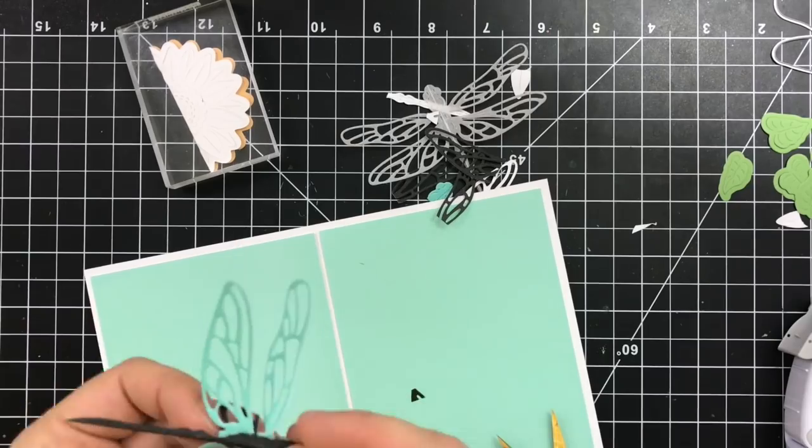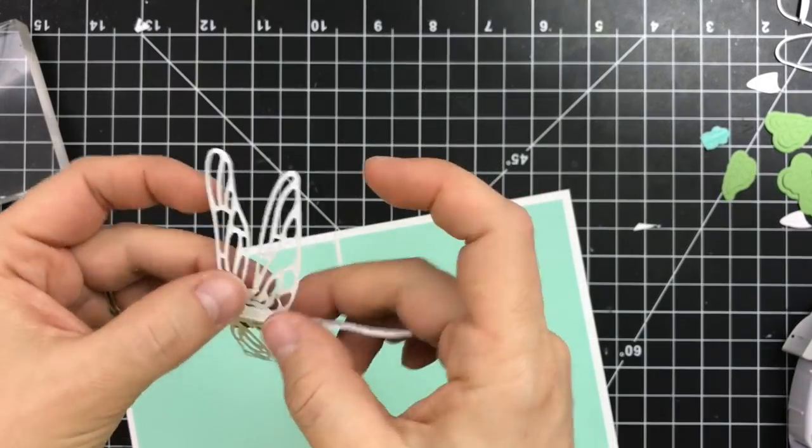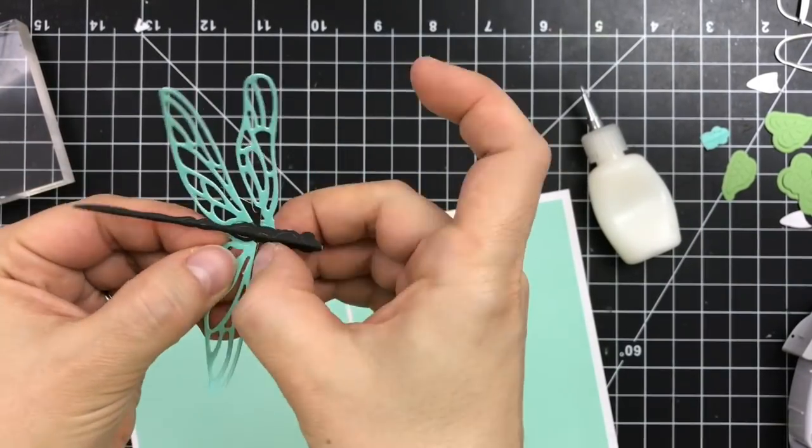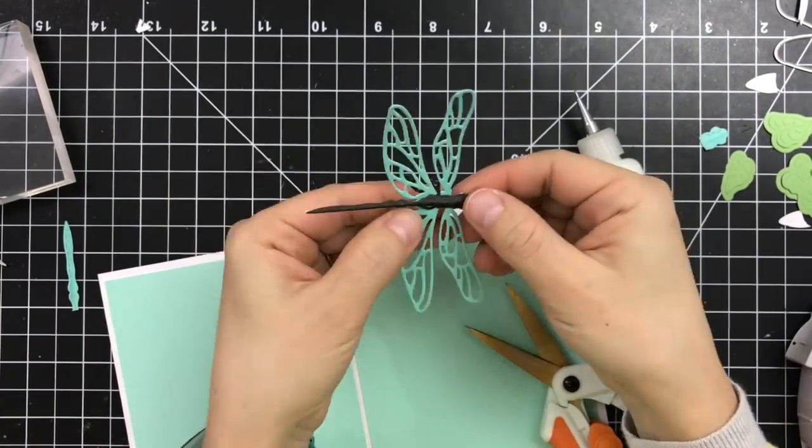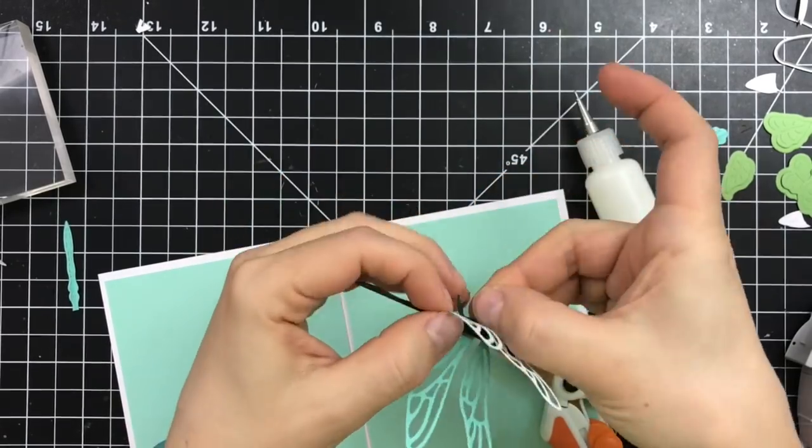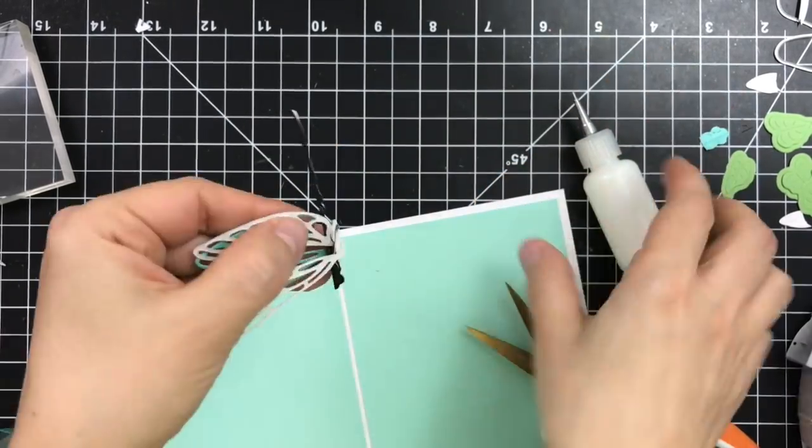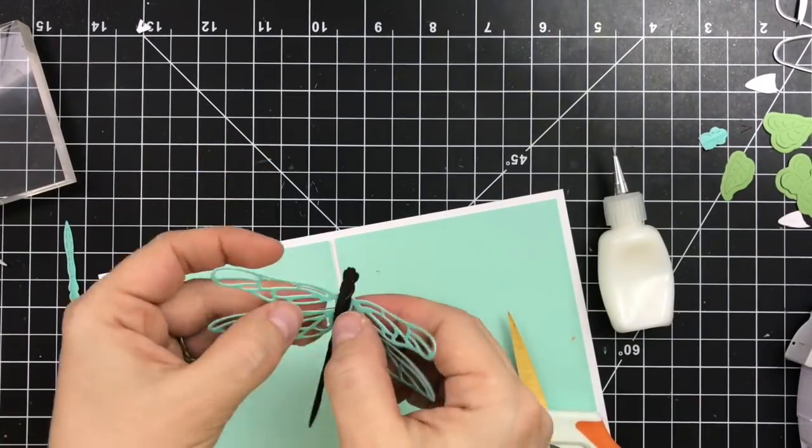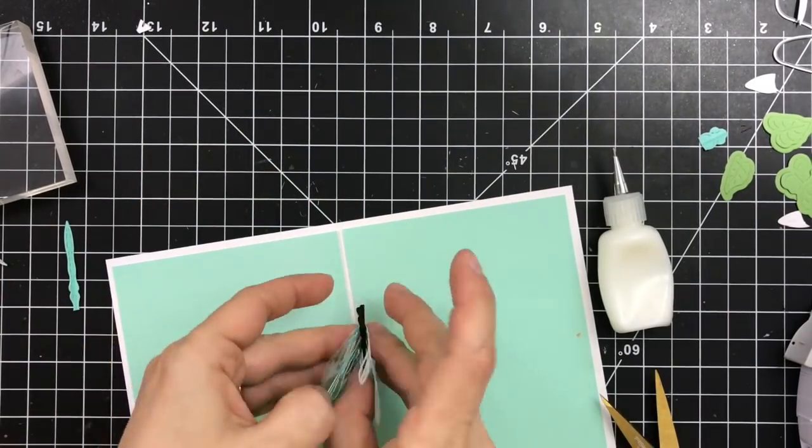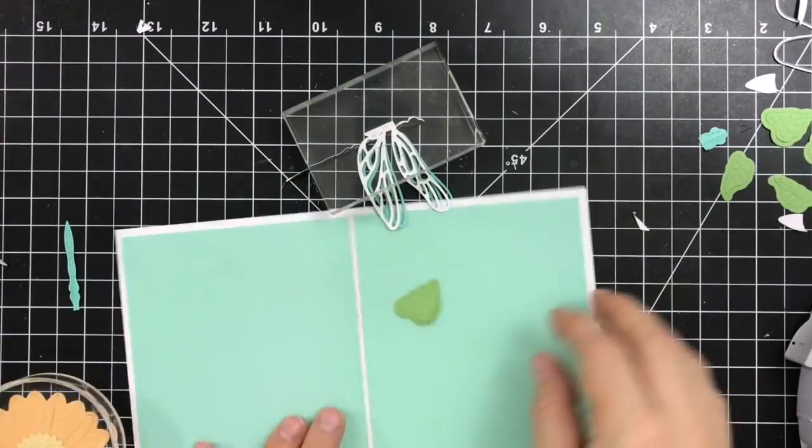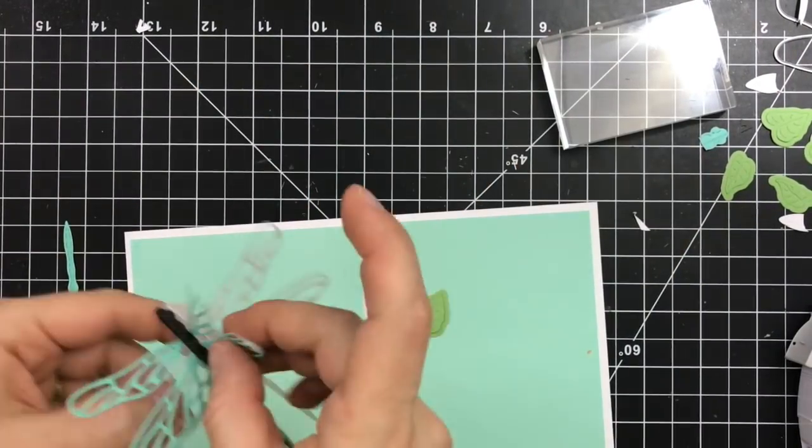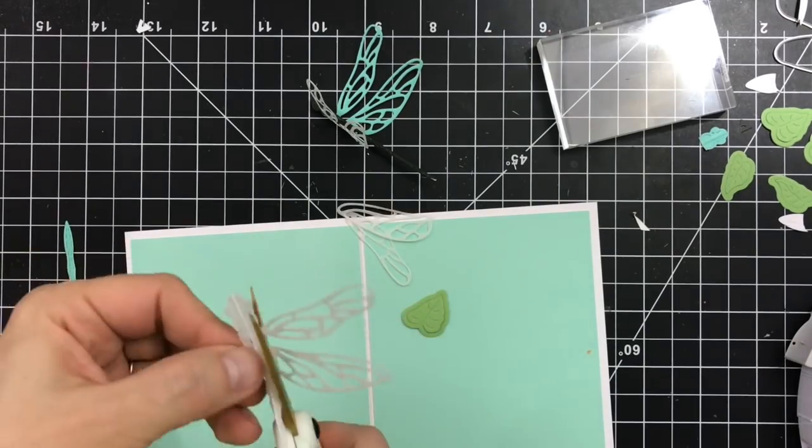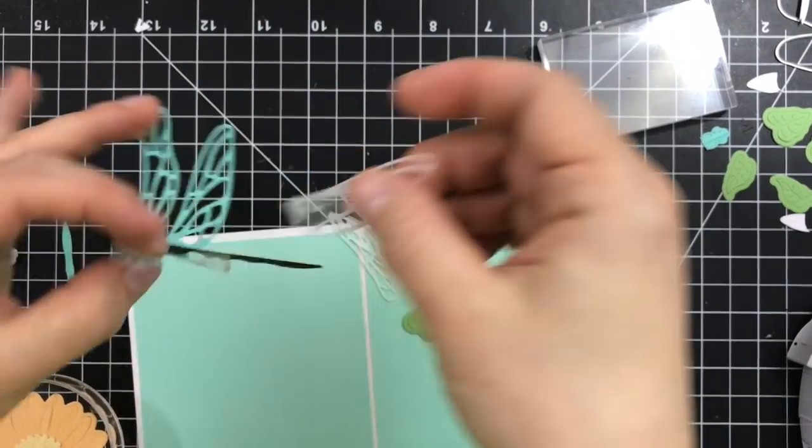So I'm just working those together. Next I'll just trim a little bit off there. So we created that mechanism and now I'm just adhering those little tabs to the wings. I placed some strong adhesive and cut off the excess from the black cardstock. And I placed an acrylic block on top to make sure that it dries up nicely.